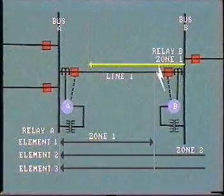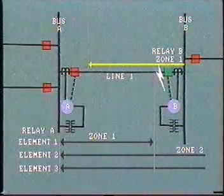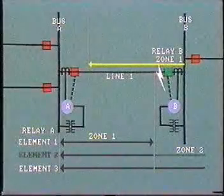Now, for a fault in the last 10% of line one, breaker B trips instantaneously, but we would have to wait for zone two clearing at A.